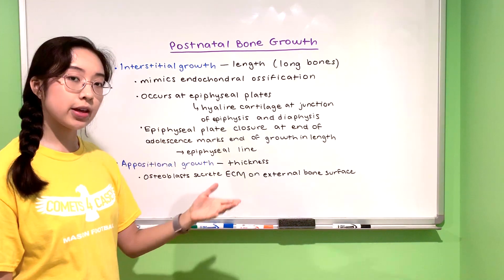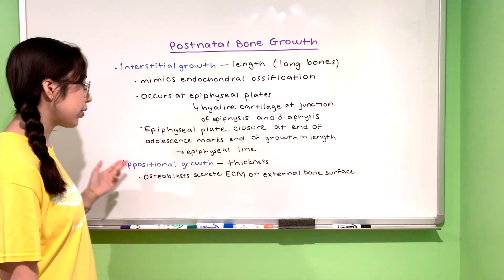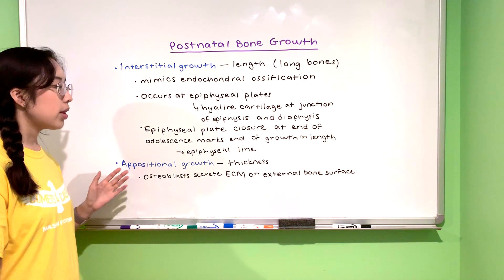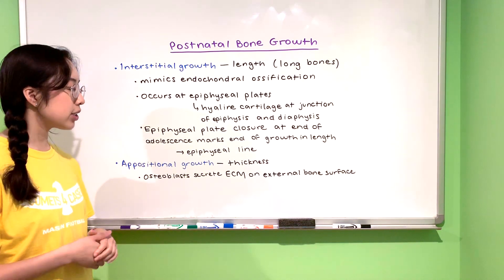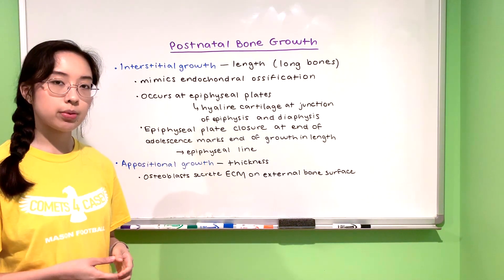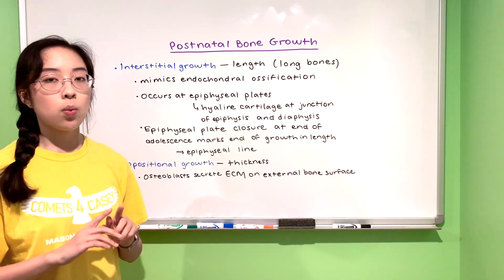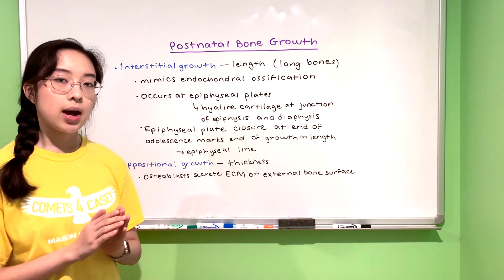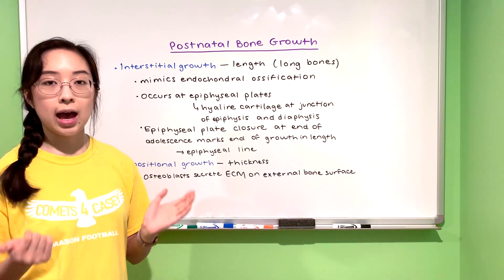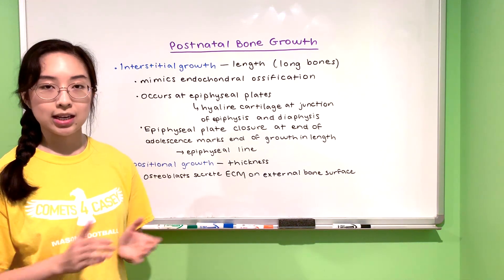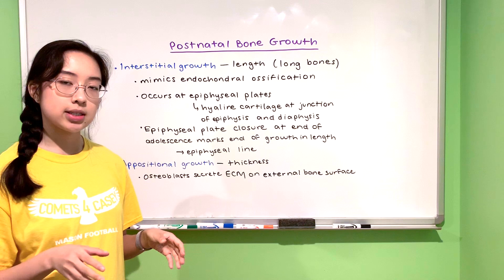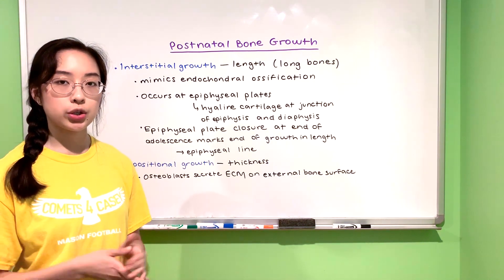Interstitial growth is growth in length, and growth in thickness is called appositional growth. Basically, osteoblasts secrete extracellular matrix on the surface of the bone while osteoclasts work on the inside of the bone to enlarge the cavity inside, and through the actions of both of these cells the bone can grow thicker and sturdier.